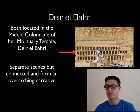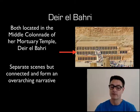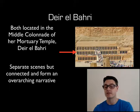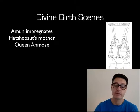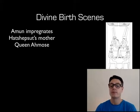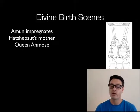They are separate scenes, but they form an overarching connected narrative. The Coronation Scenes continue on after the Divine Birth Scenes. The Divine Birth Scenes demonstrate Hatshepsut being physically the daughter of the god Amun.